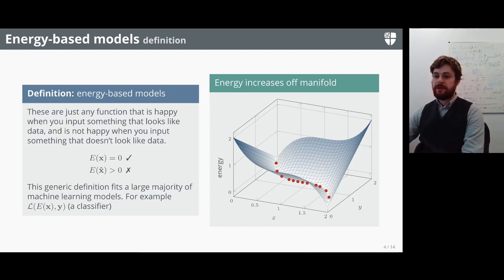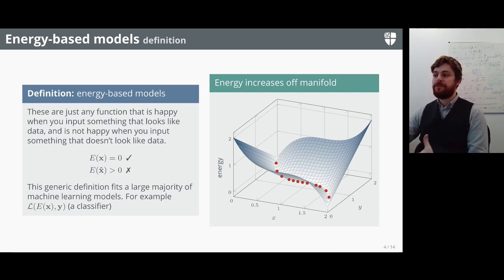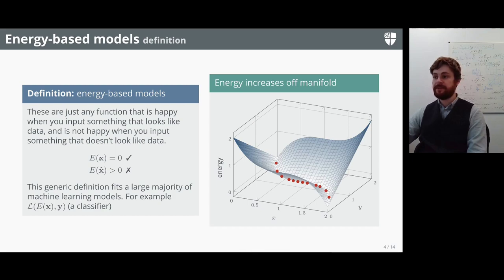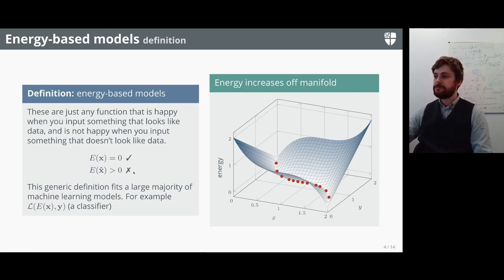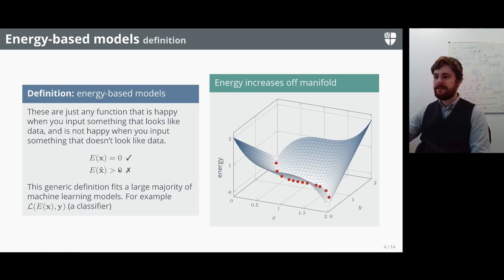Now let's move on to energy models. Energy models are not really a new idea — they're any function that is happy when you give it actual data but not happy when you give it something that doesn't look like real data. When you input real data sampled from the dataset, the model tries to output zero — which is good. When you give it something that doesn't look like data, it should output a value greater than zero. Pretty much every machine learning algorithm can actually be thought of this way — it's a very generic and encompassing term.